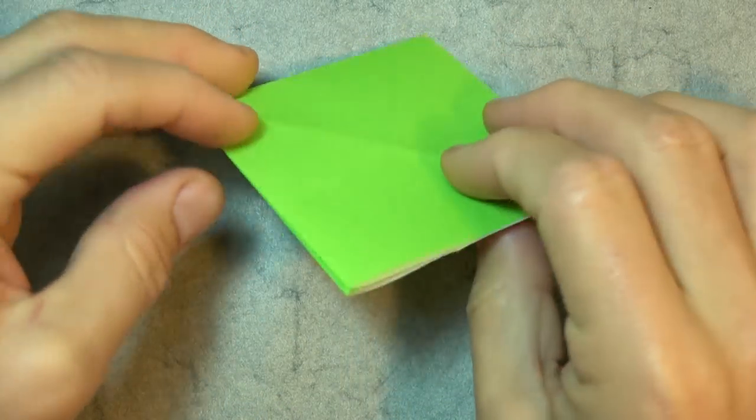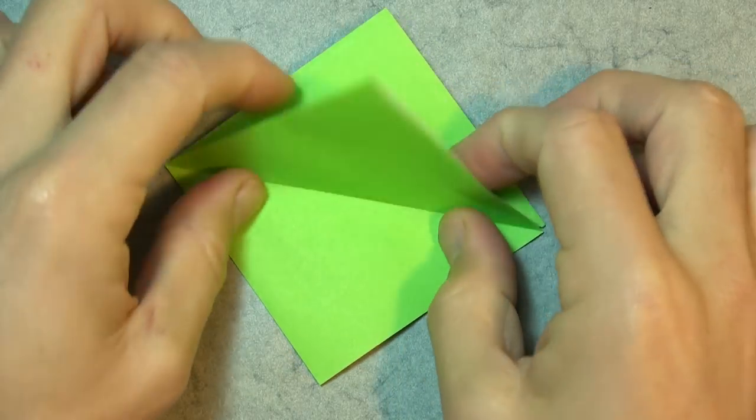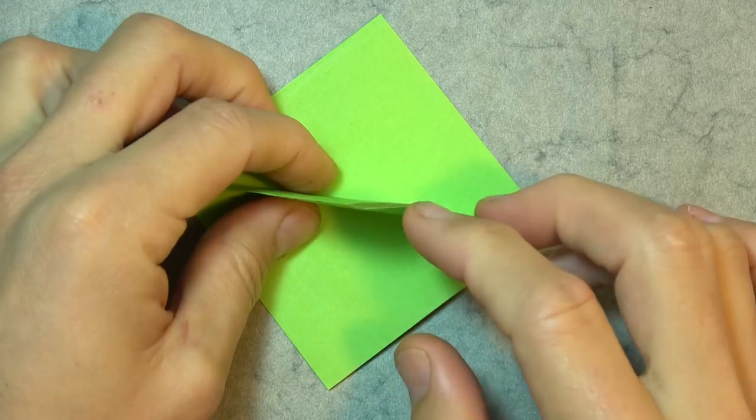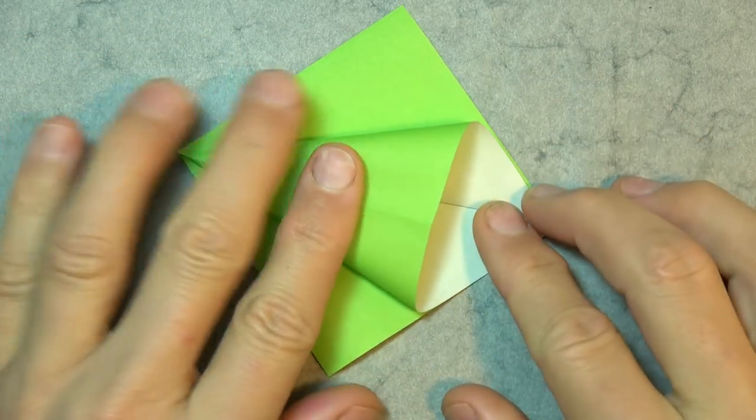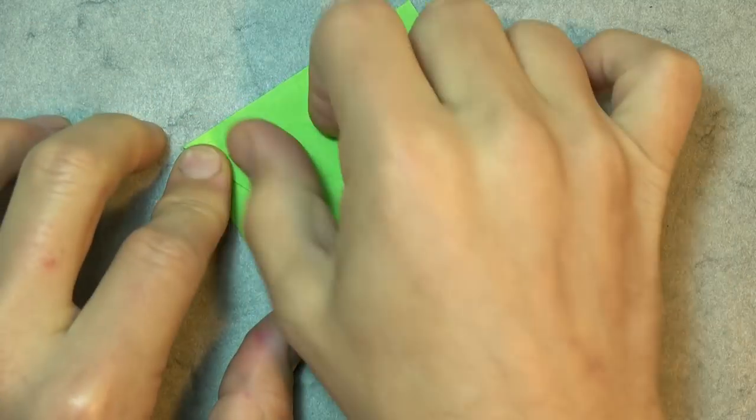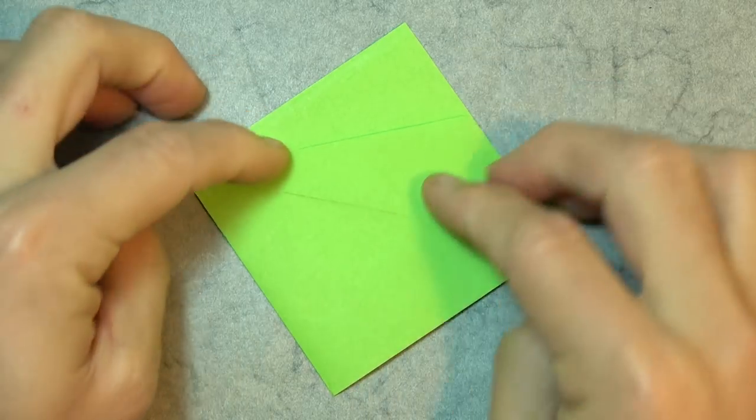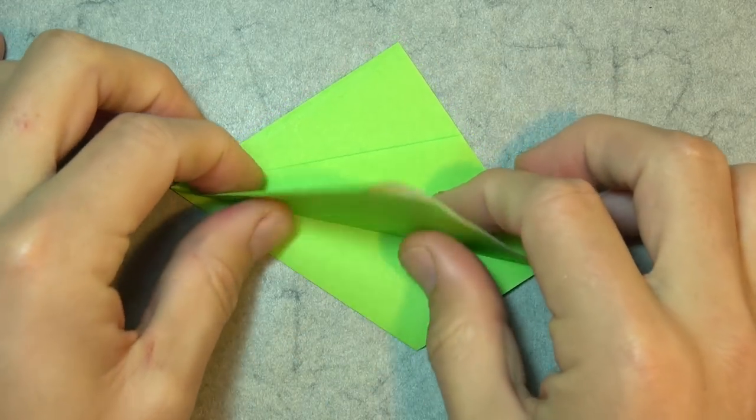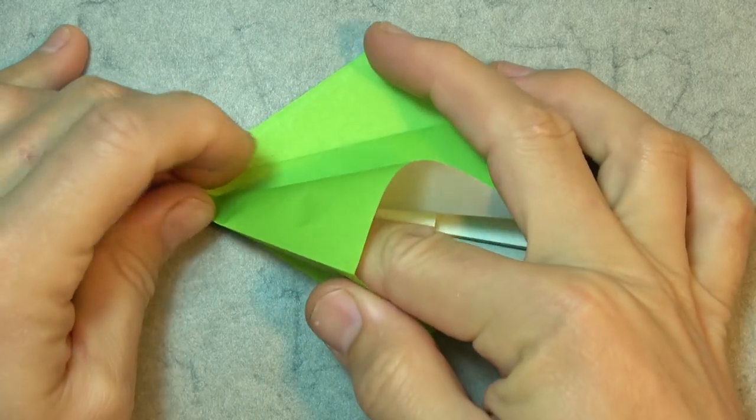Now turn over, and now fold this corner up and down. And now fold this flap up, and fold this flap up and down, open the pocket, and squash.